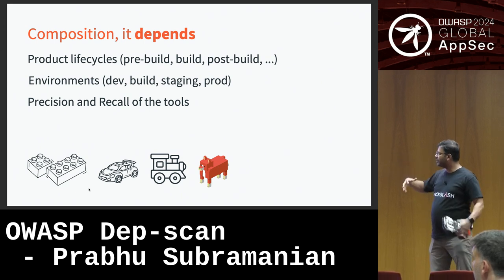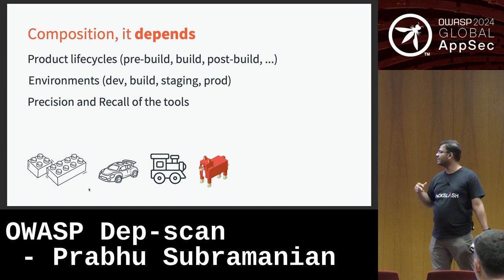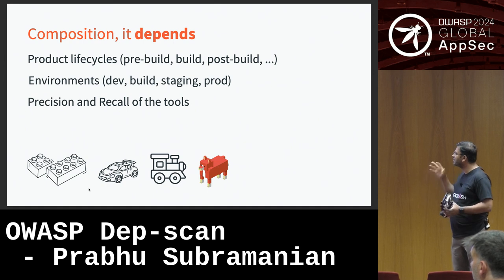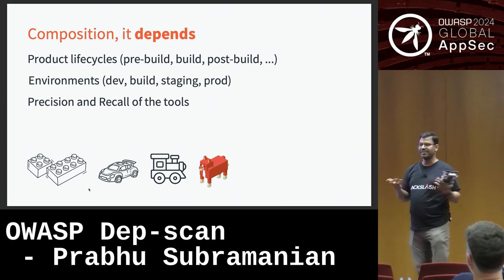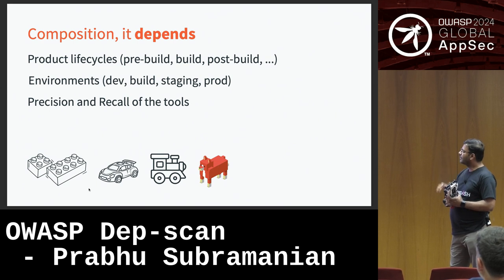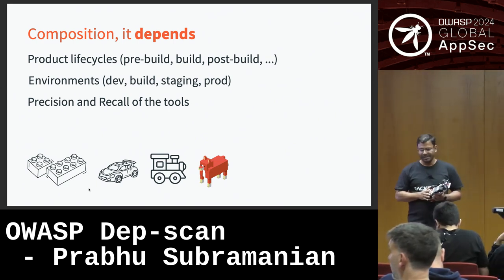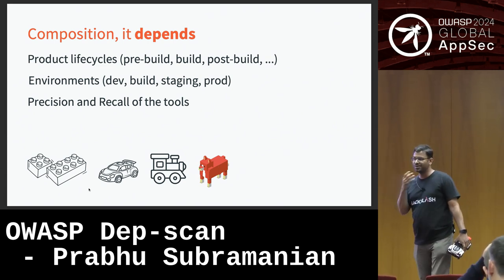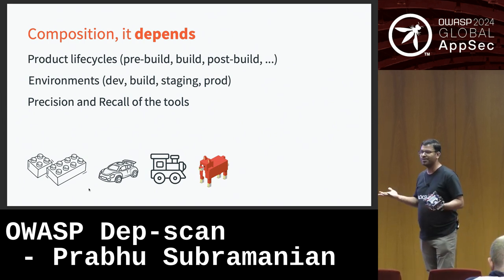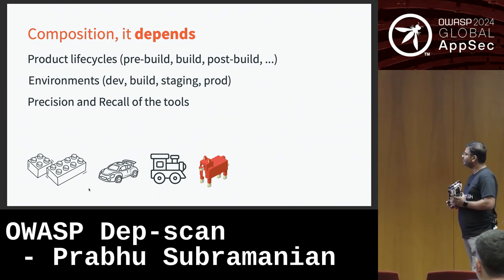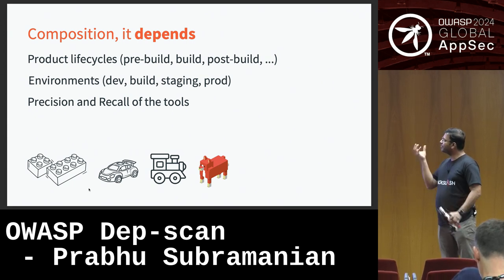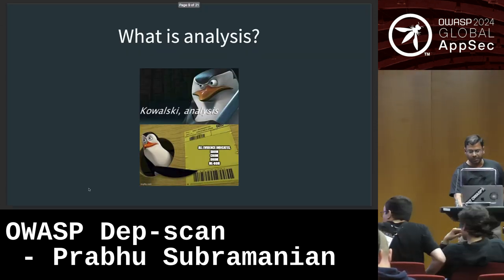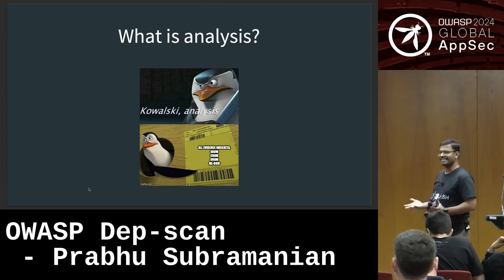The composition also differs based on your deployment profile: during development you need dev tools, during testing you need test-related libraries, and in production you'll have telemetry-related things but not testing and tracing libraries. There is no such thing as scanning the application once and calling it a day. You must think about composition across the full lifecycle, and then precision and recall of tools — because for the same tool to be precise across all lifecycle stages and environments requires a lot of work and support.